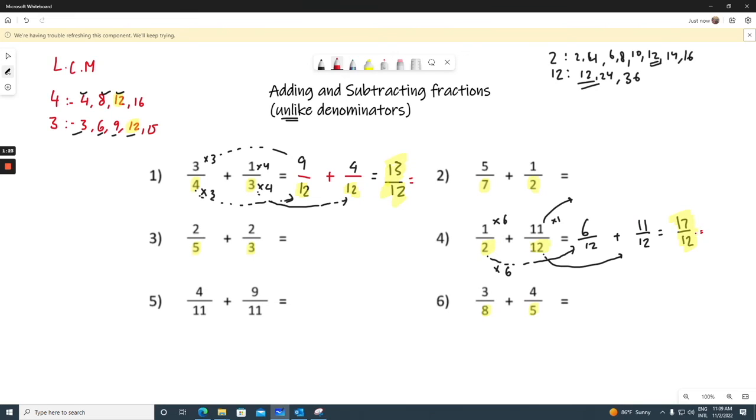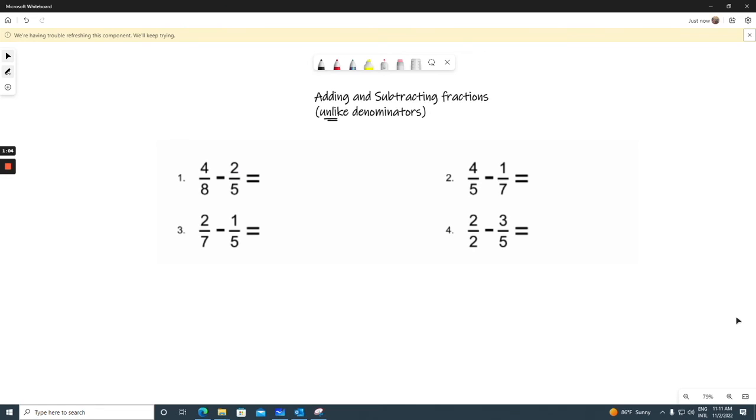So this is how we add fractions with unlike denominators. If you see question number 5, they have the same denominators. So 11 will stay 11, and 4 plus 9 will become 13. Let's do some questions for subtraction. So here we have some examples about subtraction. Same thing, different denominators.